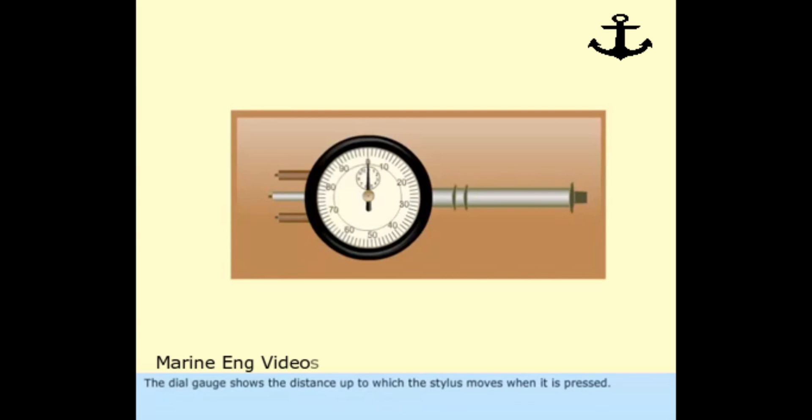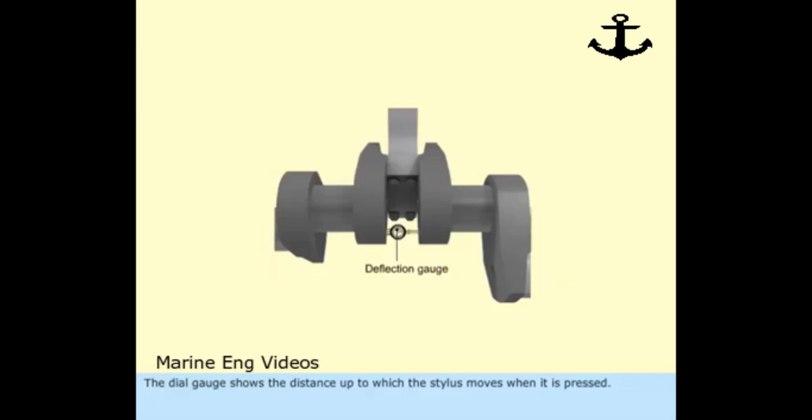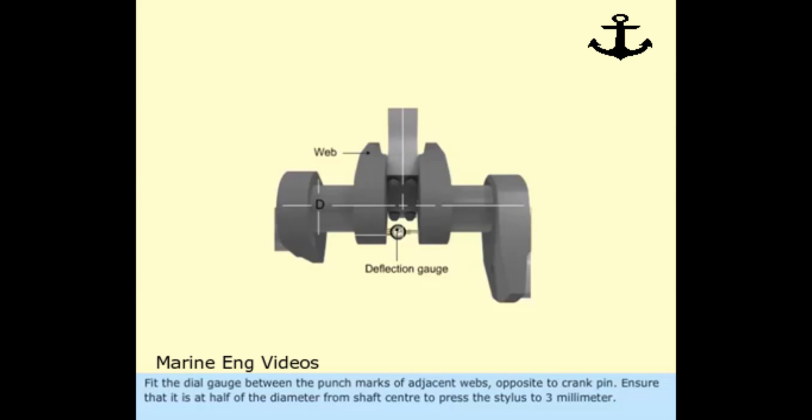The dial gauge shows the distance up to which the stylus moves when it is pressed. Fit the dial gauge between the punch marks of adjacent webs opposite to crank pin. Ensure that it is at half of the diameter from shaft center to press the stylus to 3 mm.